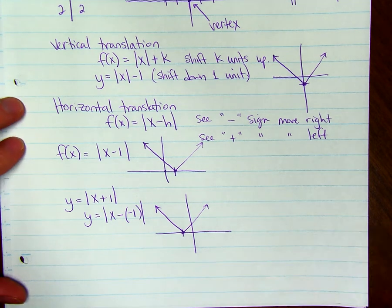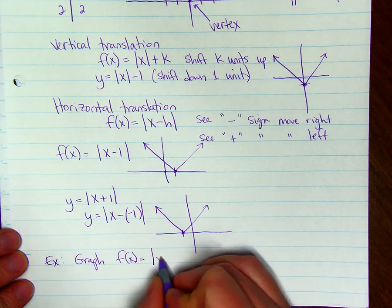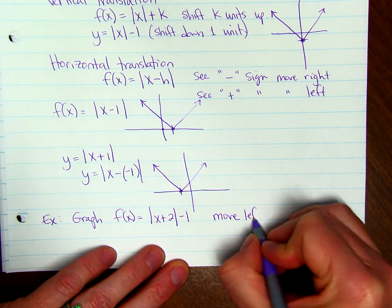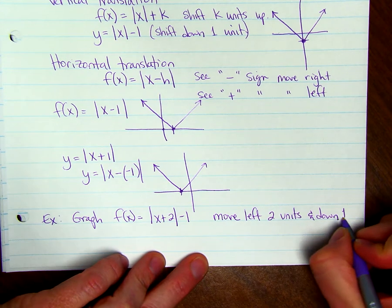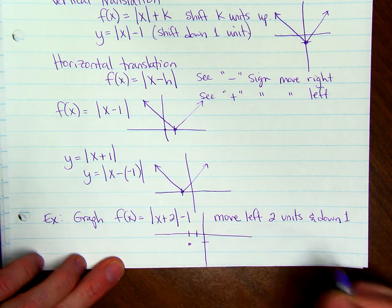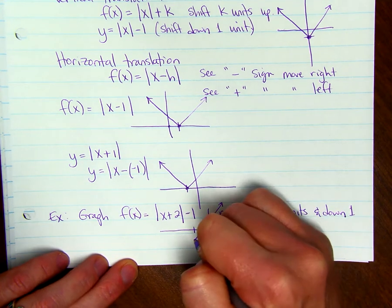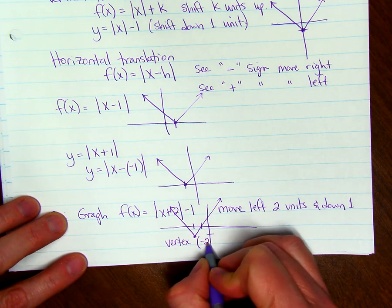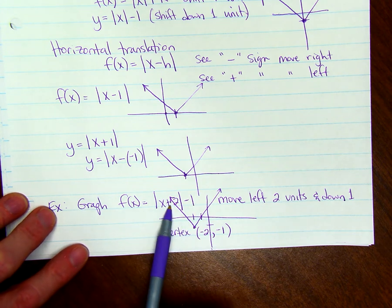We can put both of those together. For example, graph f of x equals the absolute value of x plus 2, then minus 1. We're going to move left 2 units because we saw a plus sign, and down 1 unit. So starting at the origin, we move left 2 and down 1 — that's where our vertex goes — then draw the absolute value function. The vertex is at negative 2, negative 1. You can also read the vertex directly from the equation: plus 2 inside gives negative 2 for x, and minus 1 outside gives negative 1 for y.